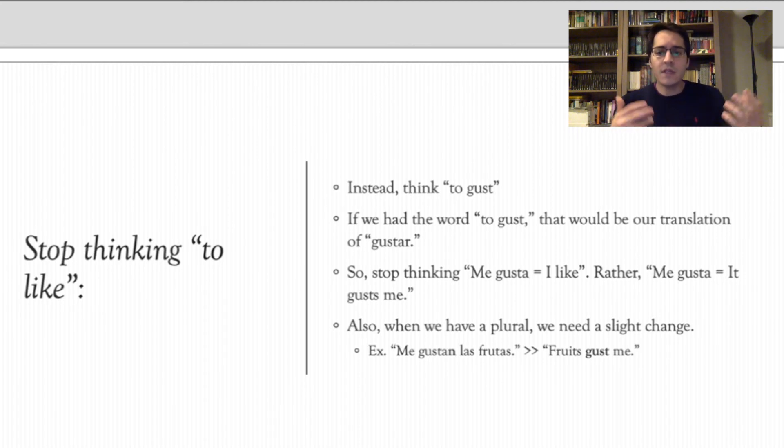And that would be like fruits gust me, or the fruits gust me. Notice how whenever it's plural in English, we get rid of the S. Instead of saying gusts, we say the fruits gust me. Just like in Spanish, whenever it's plural, we've got to add an N on to indicate it's a plural.